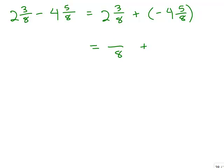They're both eighths, so we have a common denominator. We have 2 times 8 is 16 plus 3, giving us a new numerator of 19 here. For the second number it's negative, so we put the negative sign and change 4 and 5 eighths to an improper fraction: 8 times 4 is 32 plus 5 is 37. Make sure you don't think of it as 8 times negative 4 — that will not work. Now we have a common denominator of eighths, so we can add the numerators.